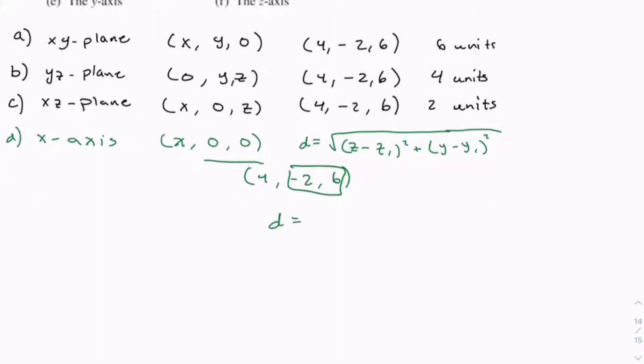So we have d = √[(6-0)² + (-2-0)²], which equals √(36 + 4) = √40, which equals 2√10.